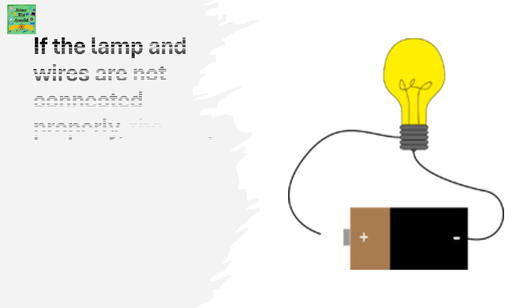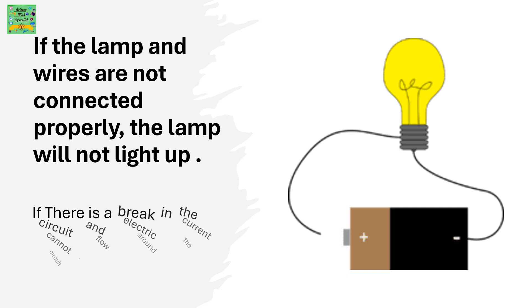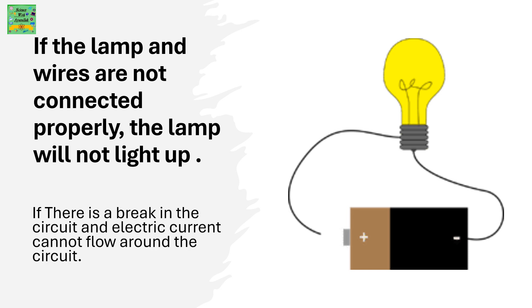And in case if the lamp and wires are not connected properly, the lamp will not light up. There is a break in the circuit and electric current cannot flow through the circuit.